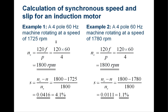Here is a demonstration calculation of synchronous speed and slip. For a four-pole 60 Hz machine rotating at 1725 RPM, the synchronous speed is NS = 120 × 60 / 4 = 1800 RPM.